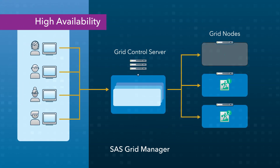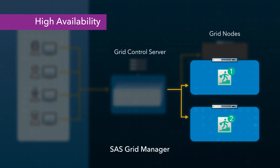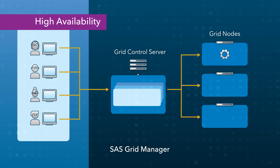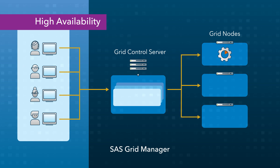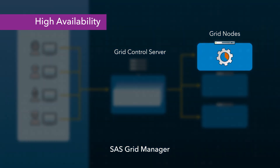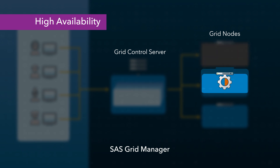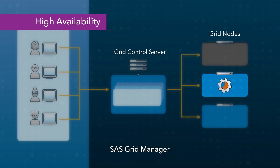If a node goes down unexpectedly, the remaining grid nodes continue to be available to handle the load. SAS Grid Manager also provides high availability for critical services running in the environment. By monitoring the services, SAS Grid Manager knows when a service goes down and fails it over to another node.